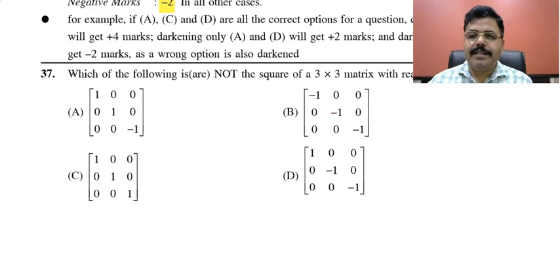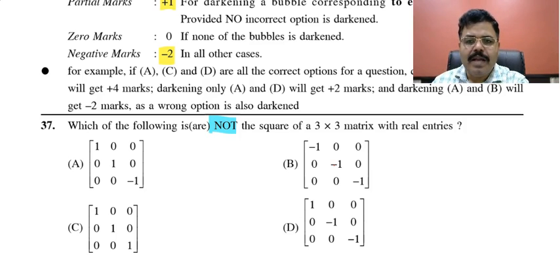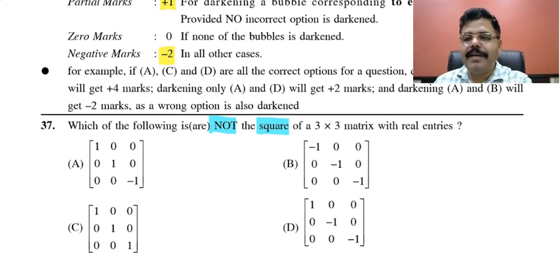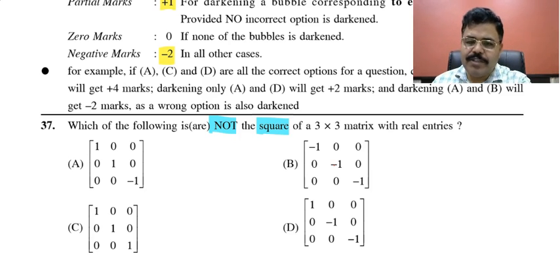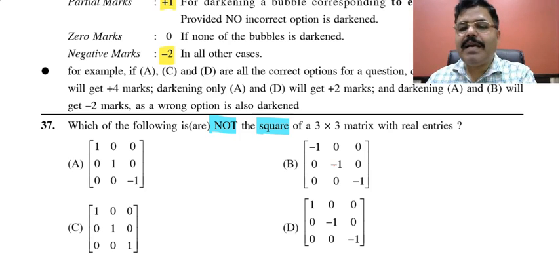Let us discuss the very first question. It is given: which of the following is not a square of a 3×3 matrix with real entries? A square of a 3×3 matrix will also be a square matrix, and we have to find whether the entries of that matrix — whose squares are given — have real entries or not. The concept is: if any square matrix has real entries, its square will also be a real matrix. If the determinant of that matrix is positive, then all entries of this square matrix are real.